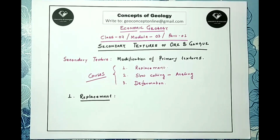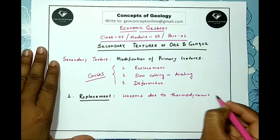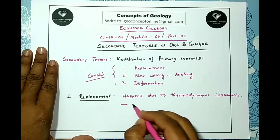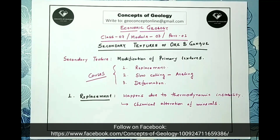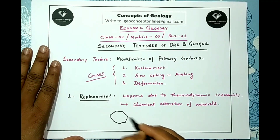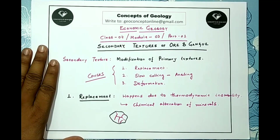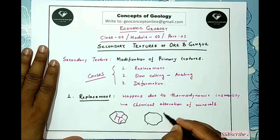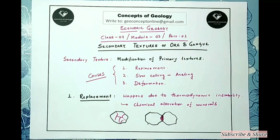The first and often primary cause that produces a secondary texture is replacement. Replacement is the chemical alteration of minerals, which happens due to thermodynamic instability. These replacements may take place along the grain boundaries, along the fracture or fault plane, or along some preferred crystallographic directions.